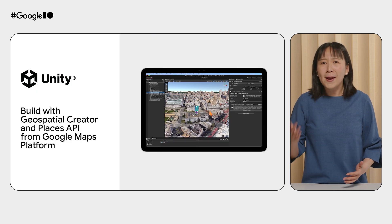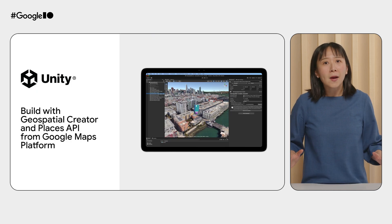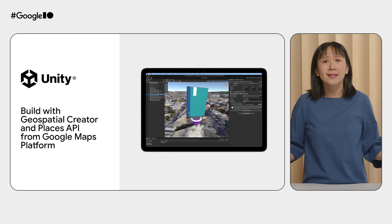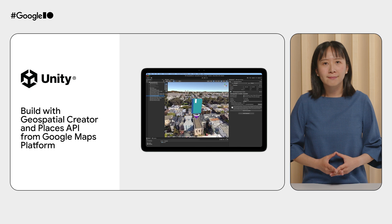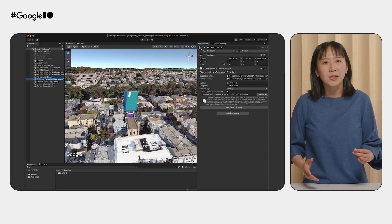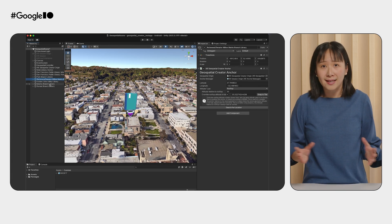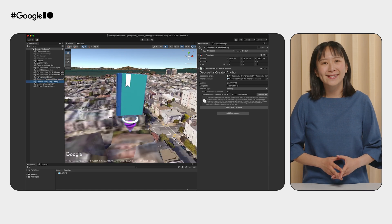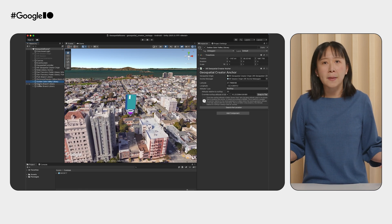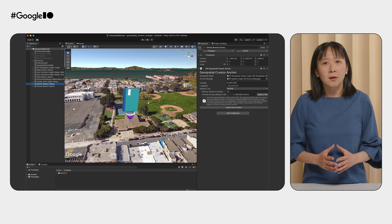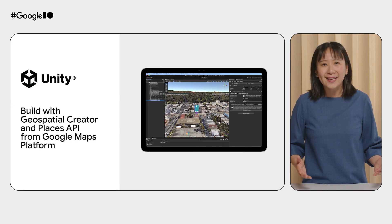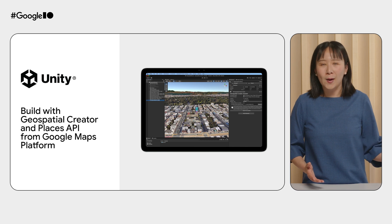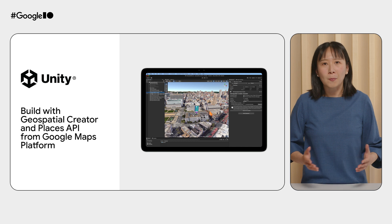Second, developers will be excited to know that now you can create and adjust anchors at scale within the Unity editor using the C-sharp programming language. Want to place the same digital object across multiple locations? It's as easy as a few lines of code. This opens up possibilities for brands and businesses to easily anchor content at all of your locations. To learn more about this exciting new feature, be sure to watch our AR workshop built with Geospatial Creator and Places API from Google Maps platform.